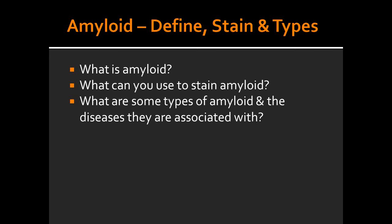What are some types of amyloid and what diseases are they associated with? There are three types of amyloid. First is AL amyloid, which is amyloid light chain, and this is associated with multiple myeloma. The second type is AA amyloid, which is amyloid associated protein, and that is associated with chronic inflammation and aging. The third type is A-beta amyloid, which is beta amyloid, and that is found in Alzheimer's disease.